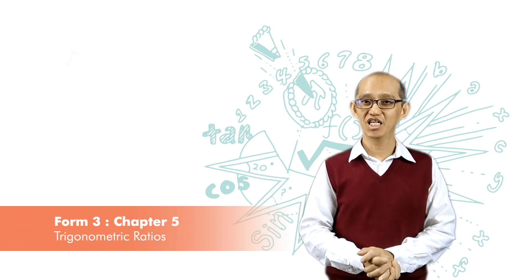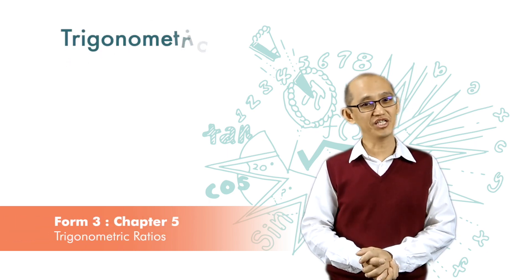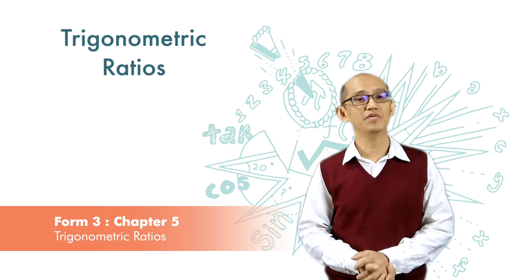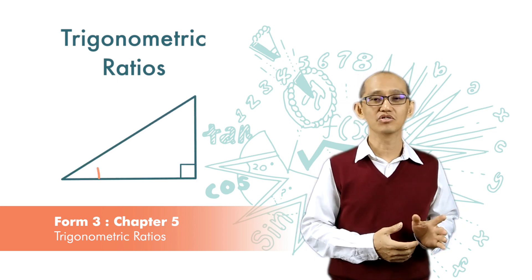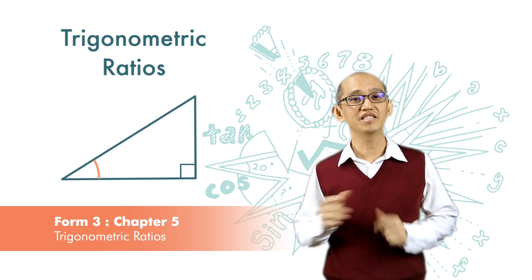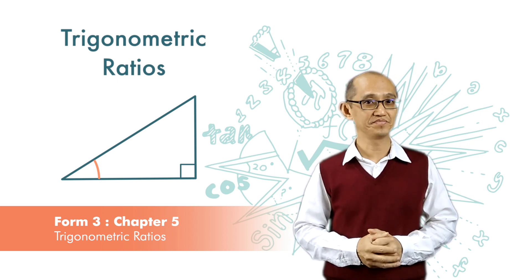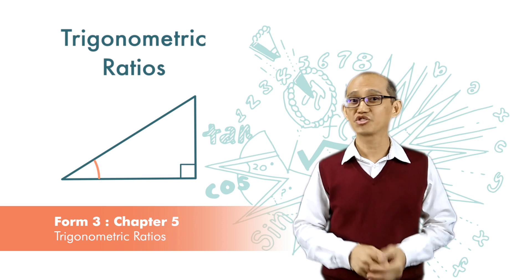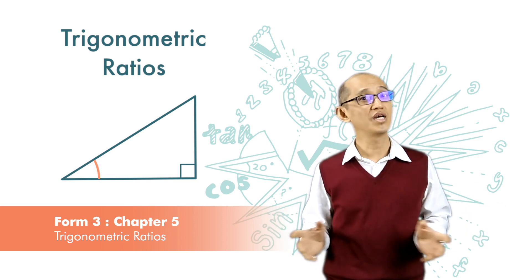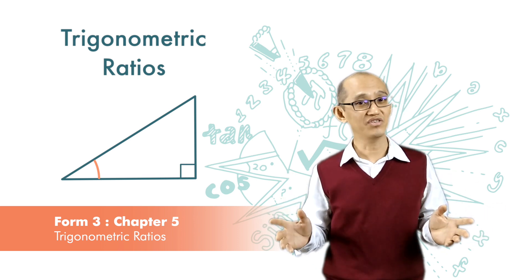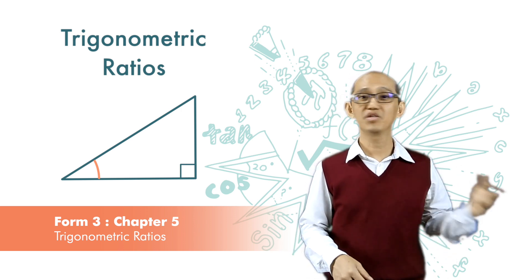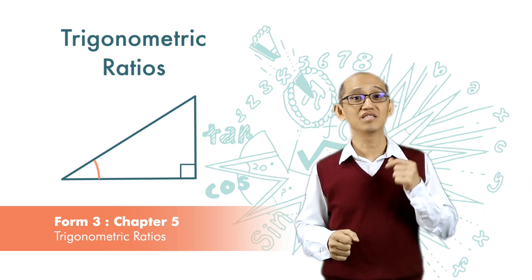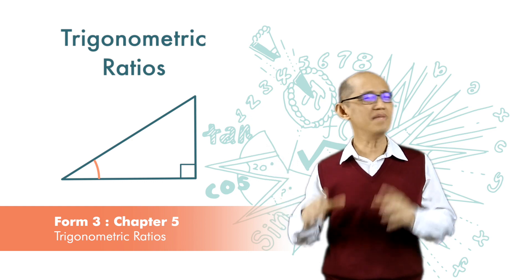Today we are going to learn trigonometric ratios. Trigonometry is about the relationship between the angle and the sides in a right angle triangle. It is a very important topic because there are so many things to do with angles and length in this world — from buildings to mountains, even the sun, the stars, and many more.